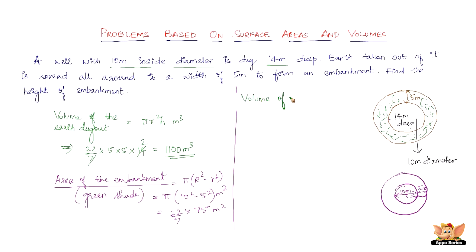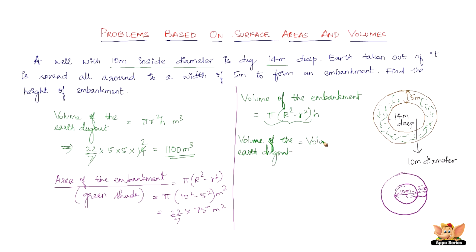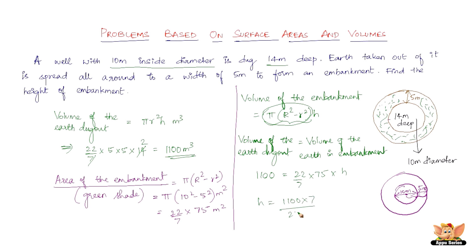The volume of the embankment is area times height. We equate the volume of earth dug out to the volume of the embankment: 1100 cubic meters equals 22/7 times 75 times h. Solving for h: h equals 1100 times 7 divided by (22 times 75), which gives 4.66 meters.